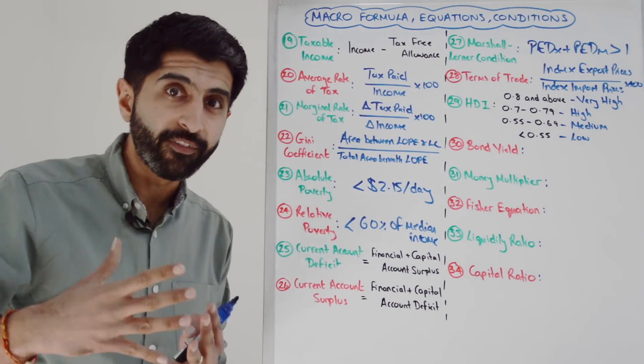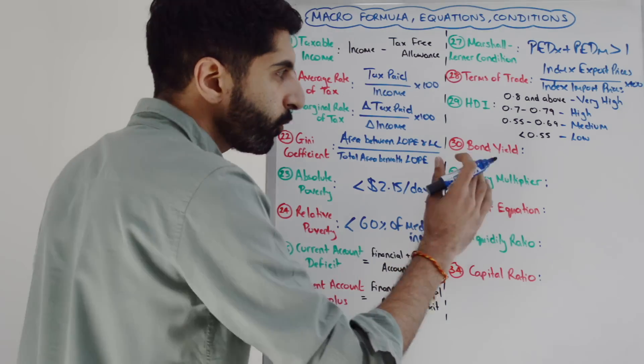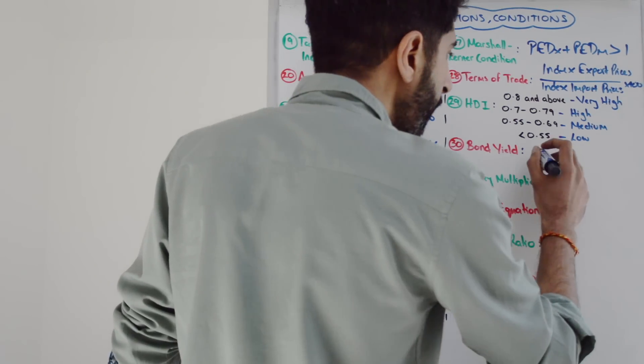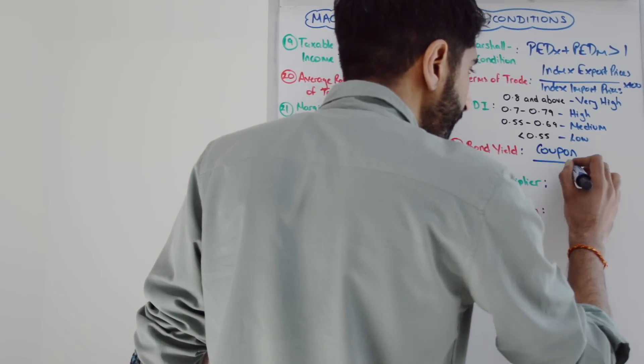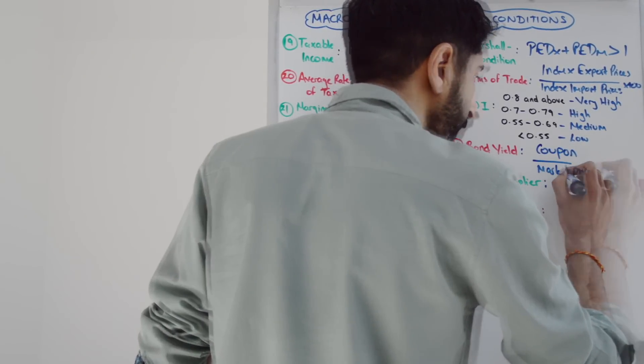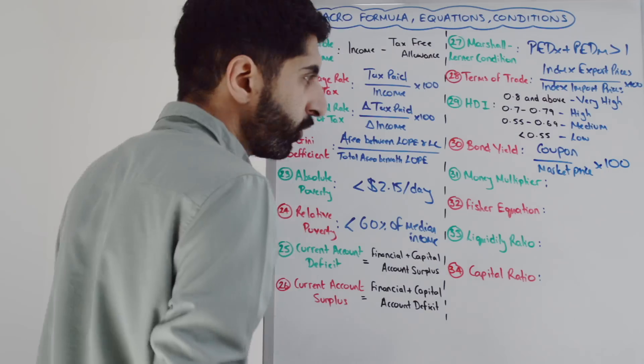How to work out the yield on a bond: you take the coupon rate - the interest rate on the bond - divide by the market price of the bond, multiply by 100.